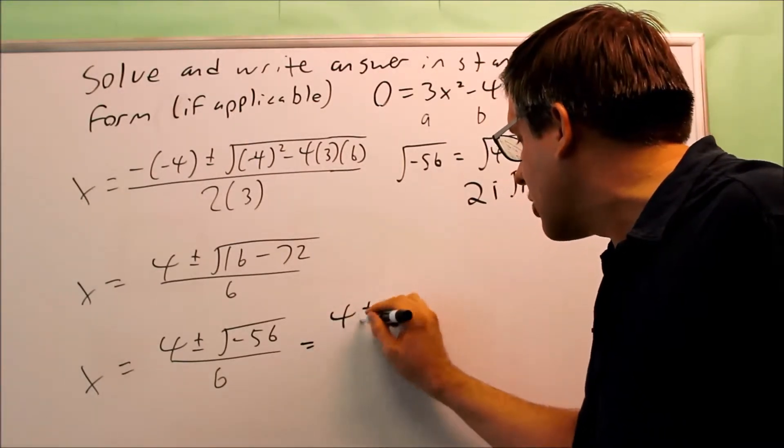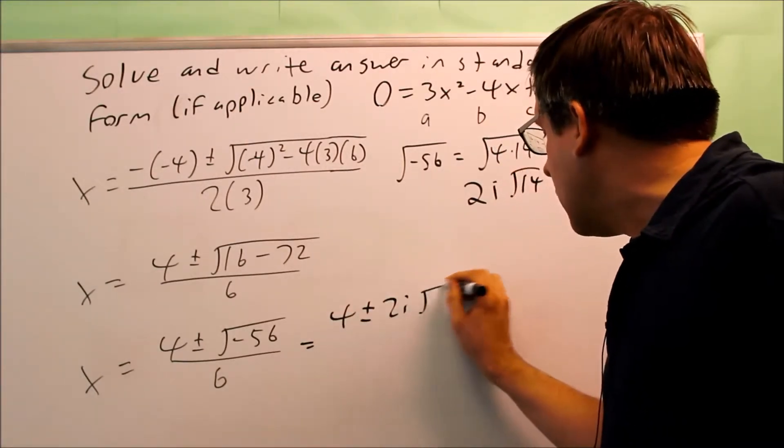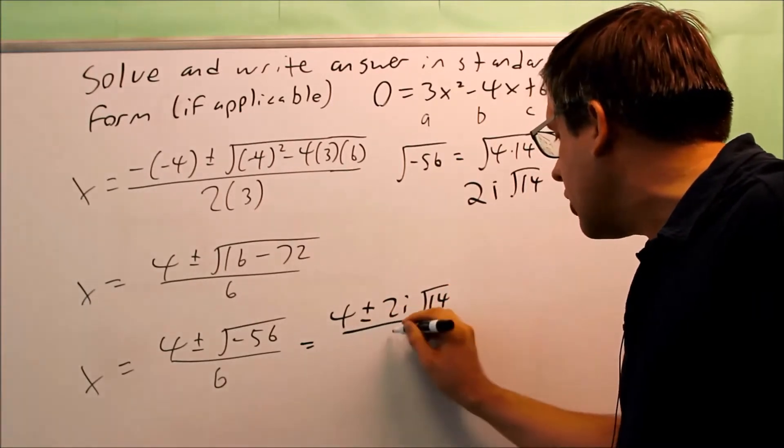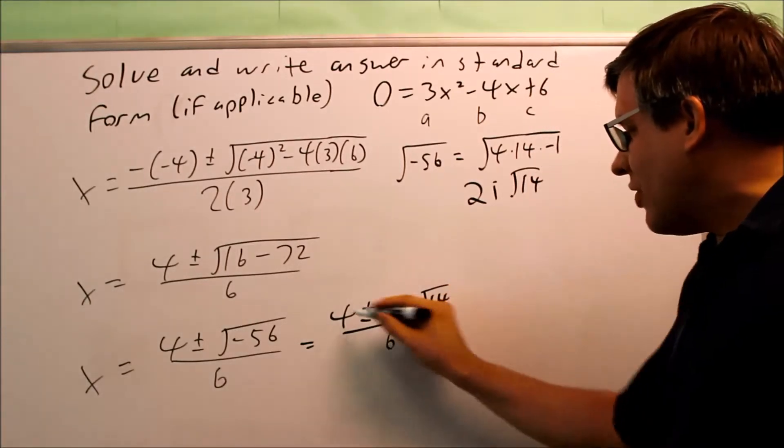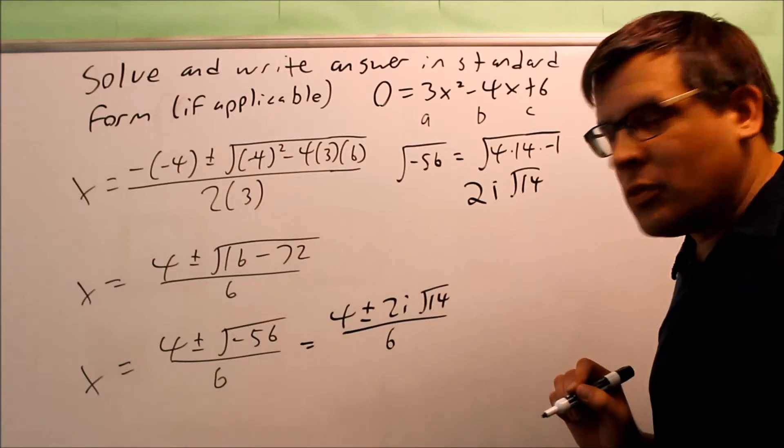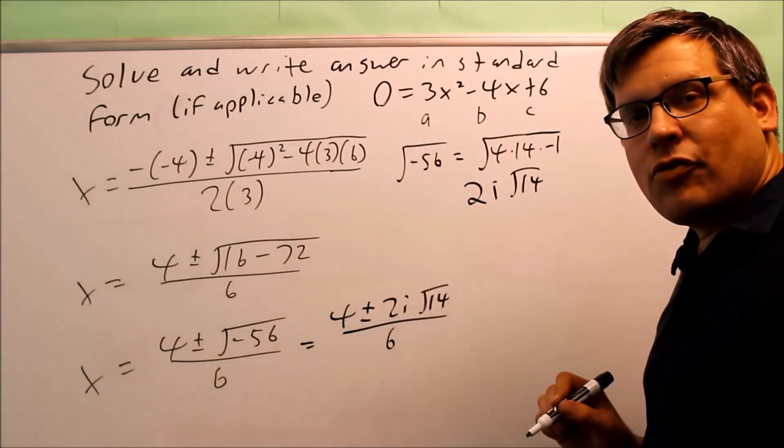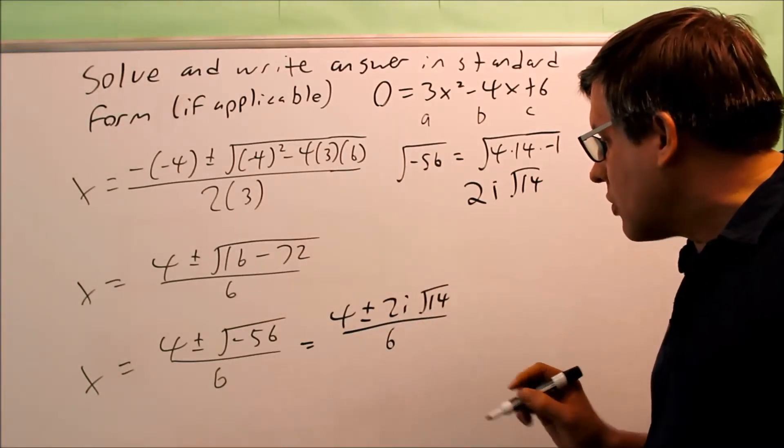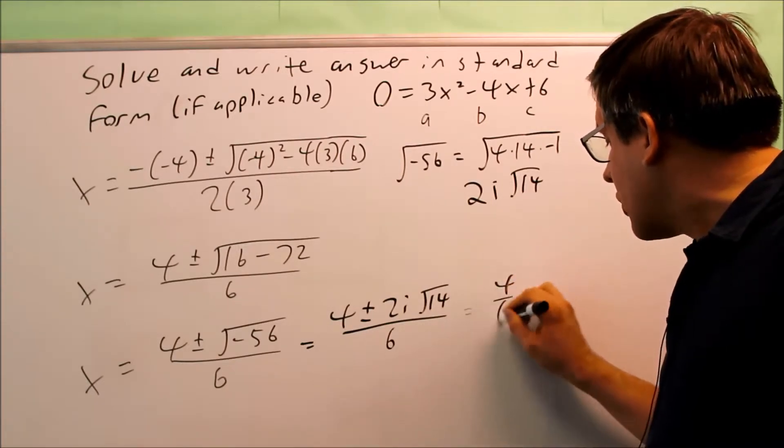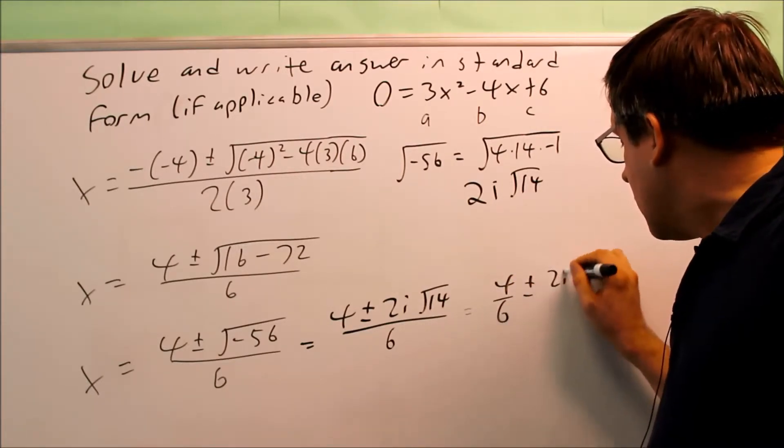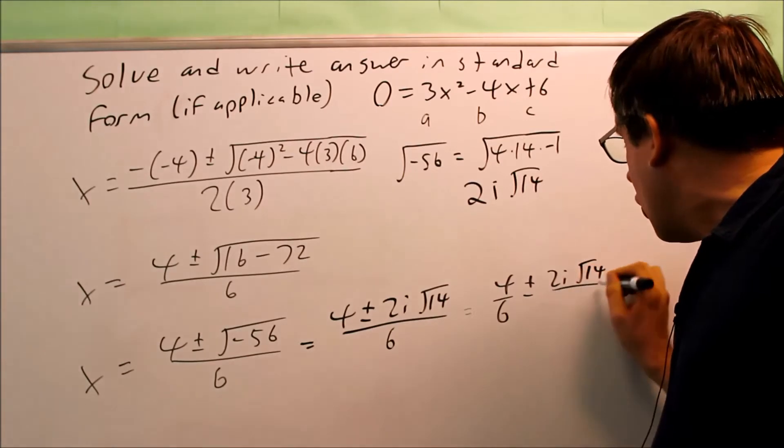So, therefore, this I can turn into 4 plus or minus 2i square root of 14, all of that over 6. This is not in proper standard form. Again, you need to have two separate fractions when you have something like this. So, I want to do 4 over 6 plus or minus 2i square root of 14 over 6.